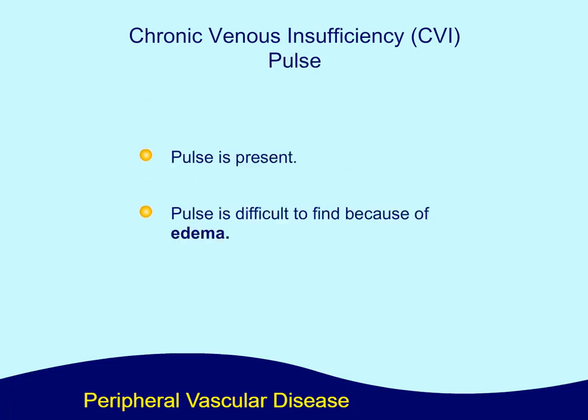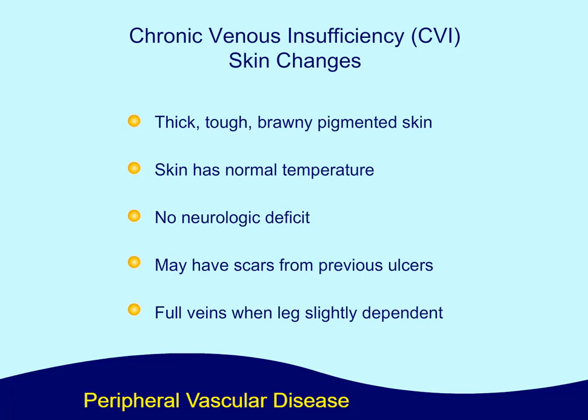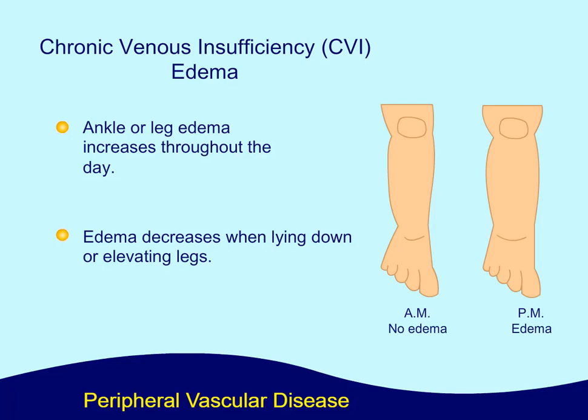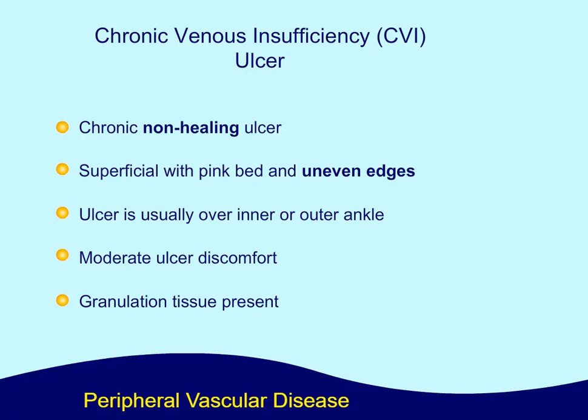Pulse. The pulse is present, but difficult to find because of the edema. Skin changes include thick, tough, brawny, pigmented skin with normal temperature and no neurologic deficit. There may be scars from previous ulcers, and full veins when the leg is slightly dependent. Edema. Ankle or leg edema increases throughout the day and decreases when lying down or elevating the legs. Ulcer. With CVI, there may be a chronic, non-healing ulcer — superficial, with a pink bed and uneven edges, usually over the inner or outer ankle, with moderate discomfort and granulation tissue present.